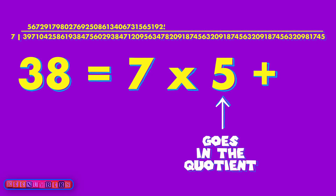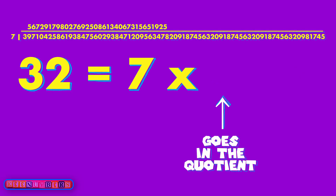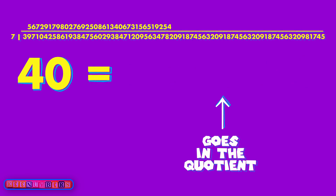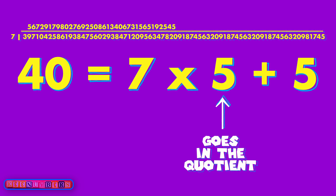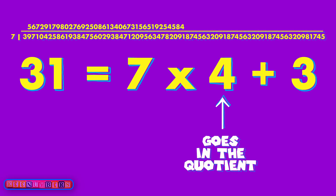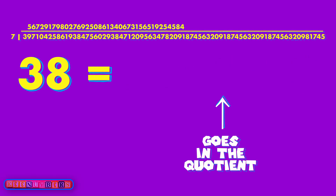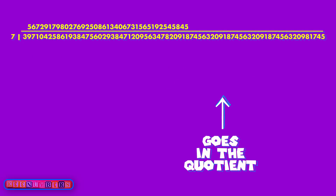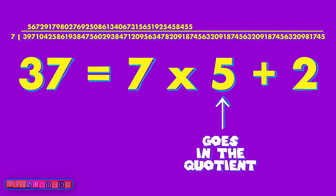We've got 35 and three — five goes upstairs; you have three left over. Pull down the two to get 32 — now you have 28 and four, so put that four upstairs. Pull down the zero: 40, which is 35 and five. Five times seven — five goes upstairs; five left over. Pull down the nine: 59, that's 56 plus three — eight upstairs. You're gonna have 31, which is 28 and three — four upstairs. You've got three; pull down the eight: 38, that's 35 plus three — five upstairs. Pull down the seven: 37, which is 35 plus two — five upstairs and keep going. Pull down the four: 24, that's 21 and three — three upstairs. Pull down the five: 35 — hey, that's seven times five, nothing left over — five upstairs.